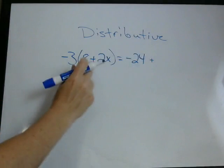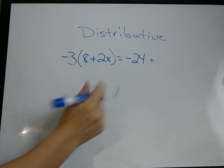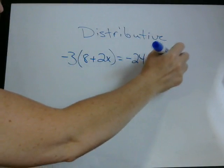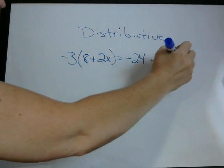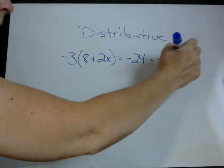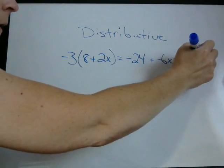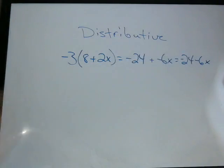Plus, and we do the second one. Negative 3 times 2x, which is negative 6x. If you're adding a negative, you're just subtracting. So remember it was negative 24 minus 6x.